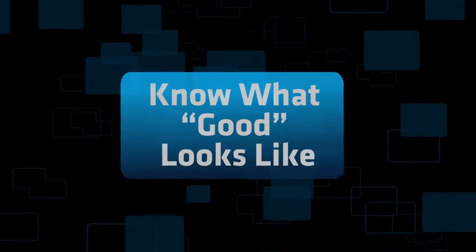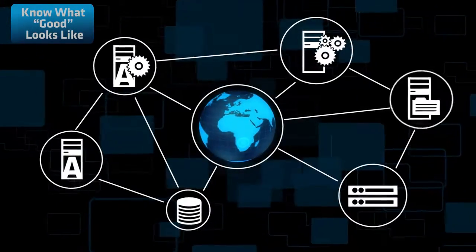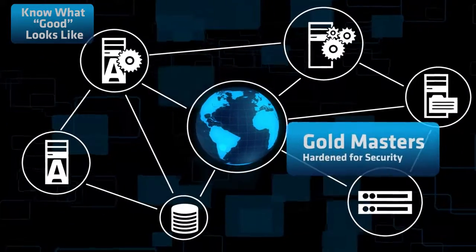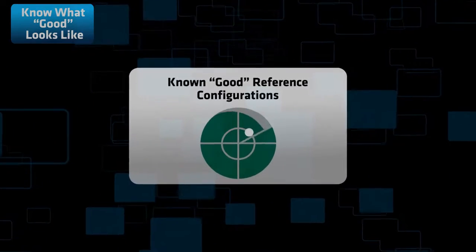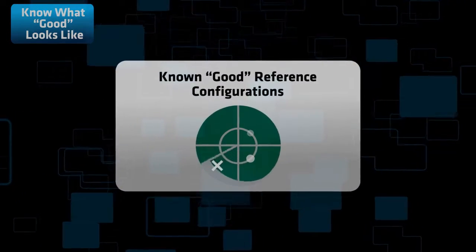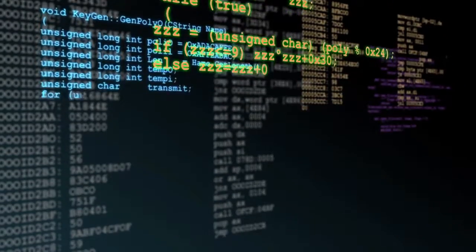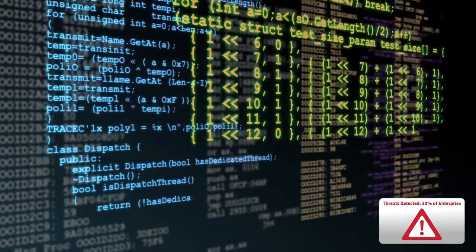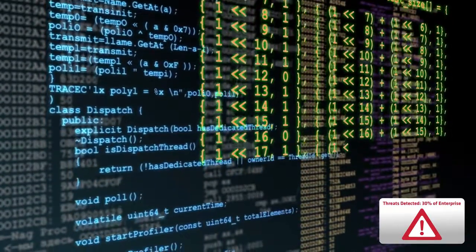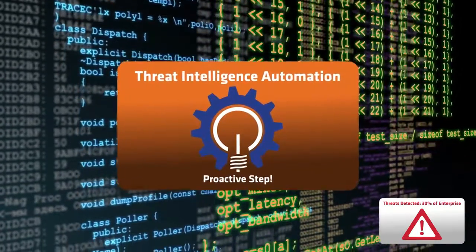Step 3: Know what good looks like. Does your organization have reference configurations — essentially gold masters hardened for security? Where are they? If not available, you'll need to create a known good reference configuration from trusted sources. Then compare the known good with the harvested inventory information. Rank and correlate findings based on risk and value. What threat and intelligence automation and integrations do you have to leverage this step?